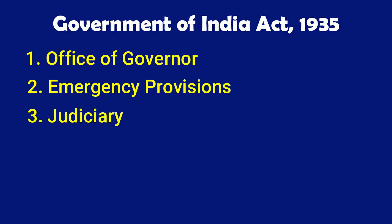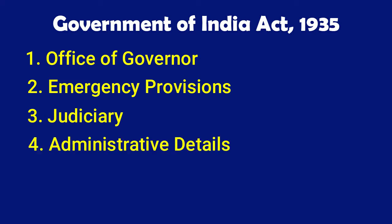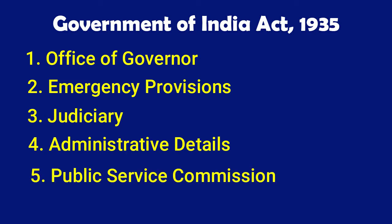Let's go through the features. First is the Office of Governor. Second is the Emergency Provisions. Third is the Judiciary. Fourth is the Administrative Rules. Fifth is the Public Service Commission.